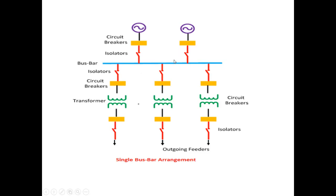The single bus scheme has advantages and disadvantages depending on economical justification. In the single bus bar scheme, only a single bus is used, hence the name. Its advantages are: it is very simple, low cost because only a single bus bar and single circuit breaker are used, and simple in operation.